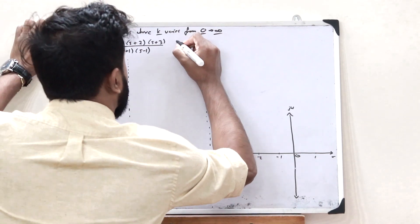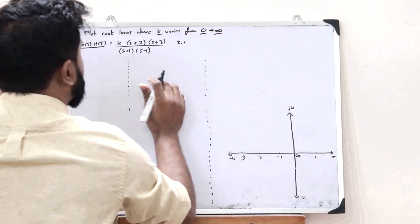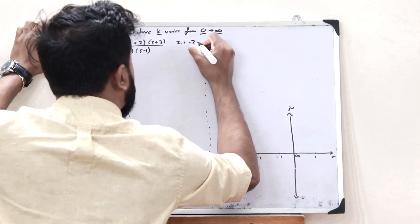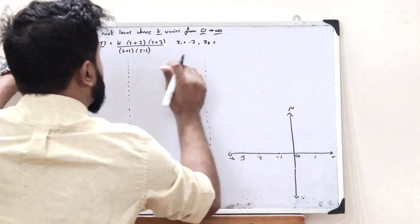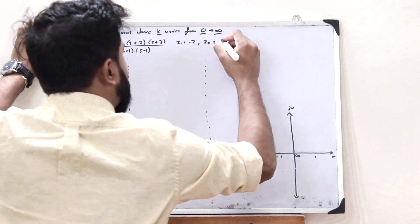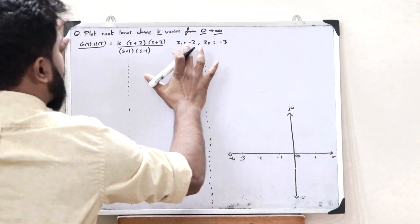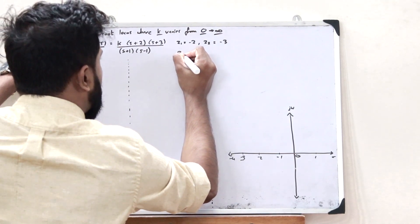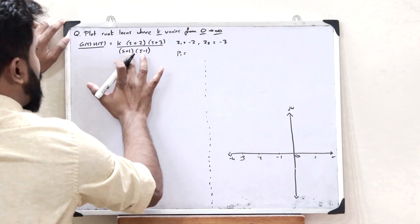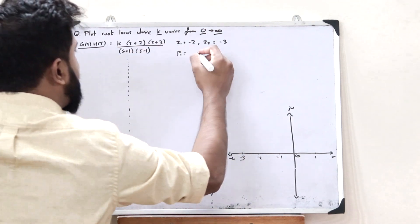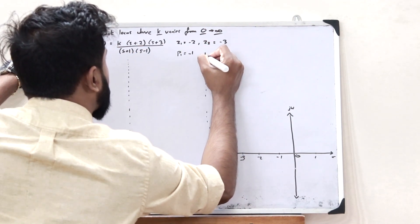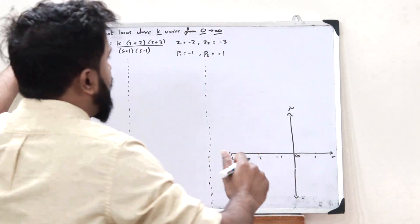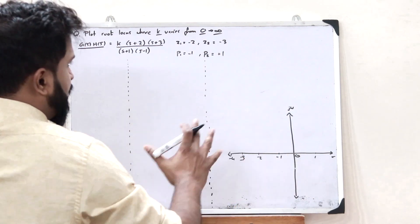The zeros are: z1 = −2 and z2 = −3, so there are two zeros. The poles are: p1 = −1 and p2 = +1. So now let us plot these.